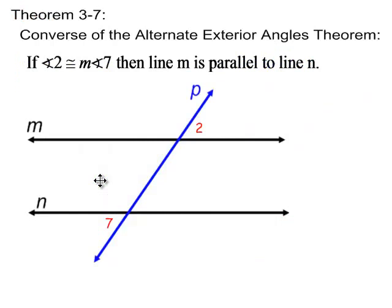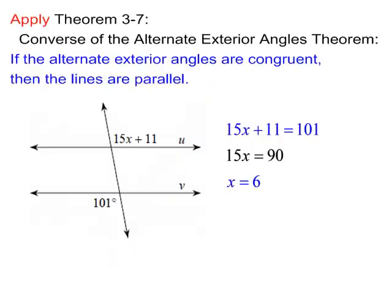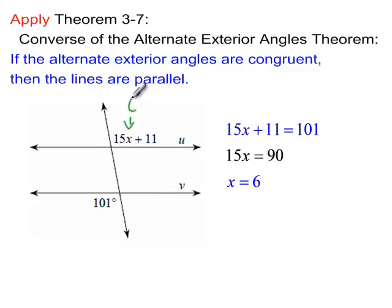Next is the converse of the alternate exterior angles theorem. If this angle is congruent to that angle, then these two lines are parallel. Those are alternate exterior angles, and for u to be parallel to v, these two measures have to be equal. So I set 15x plus 11 equal to 101 degrees and solve for x — I get x equals 6. For this line to be parallel to this line, x has to be 6. If this is 101, then that would be 79, and that would be 79 and 101, and so on.